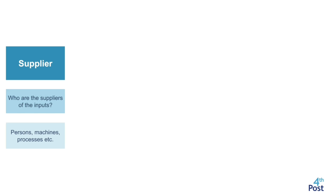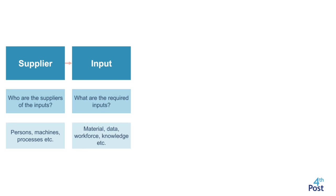In the Supplier column of the SIPOC Diagram, we identify the different suppliers of the inputs into the different processes within the work system. This could be persons, departments, machines, processes, internal or external customers, etc. In the Input part, we identify the required inputs for each process step — material, data, workforce, knowledge, information, etc.